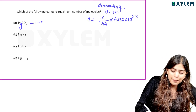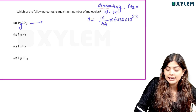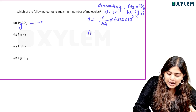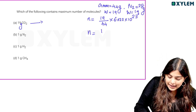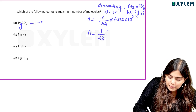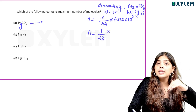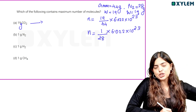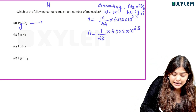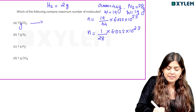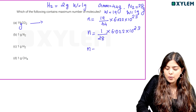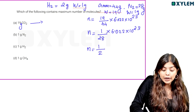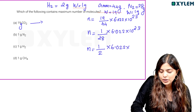For N2: gram molecular mass is 28 grams, so the number of moles = given mass divided by 28. For H2: gram molecular mass is 2 grams, so the number of moles = given mass divided by 2. The number of molecules = number of moles × 6.022 × 10²³.